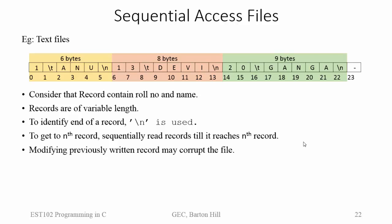Hello all. In this video session we will be discussing about sequential access files and random access files. We know that sequential access means we have to access all the previous content before getting to the required content, whereas in random access we can access the required content randomly. In files, we will be learning about sequential access files and random access files.